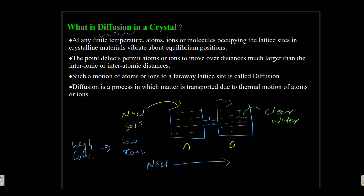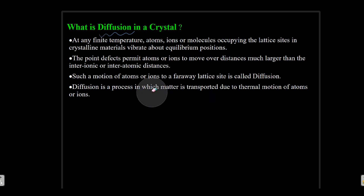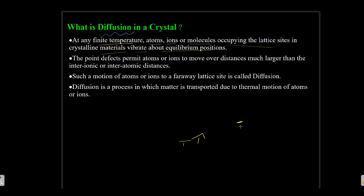Now let us see diffusion in a crystal. At any finite temperature, atoms, ions or molecules occupying the lattice sites in crystalline materials vibrate about their equilibrium position. According to the third law of thermodynamics, the crystal is perfect only at absolute zero. If the temperature is increased, the atoms or ions will start to vibrate at their crystal lattice.